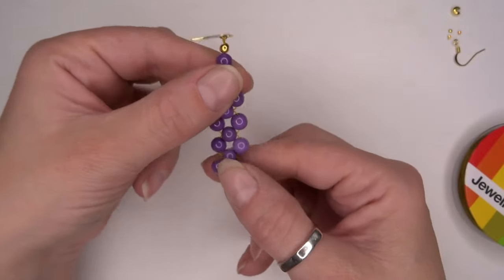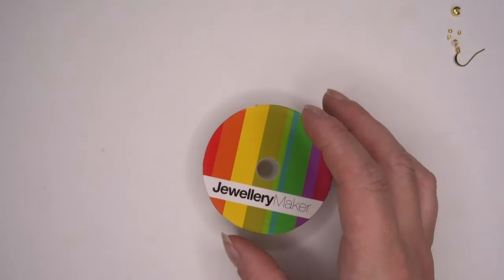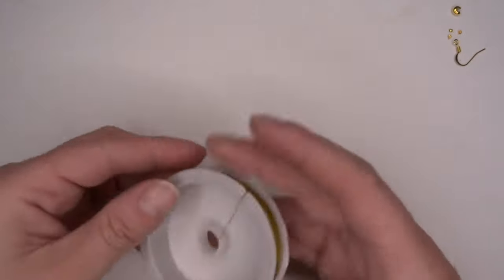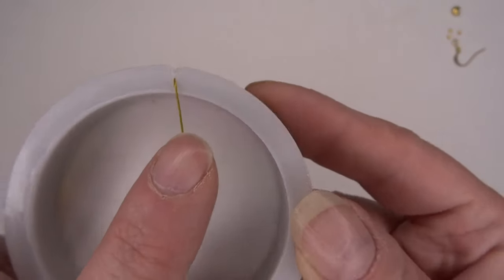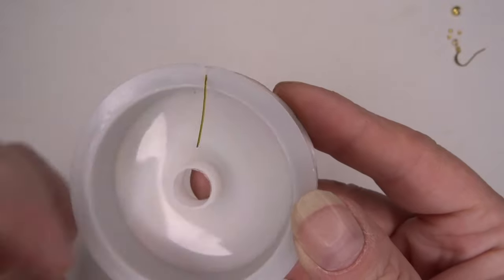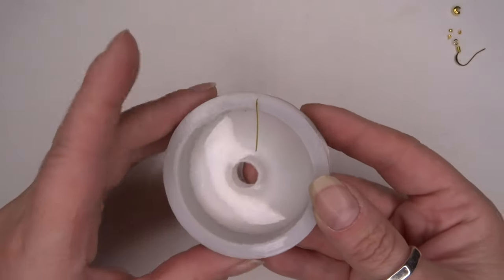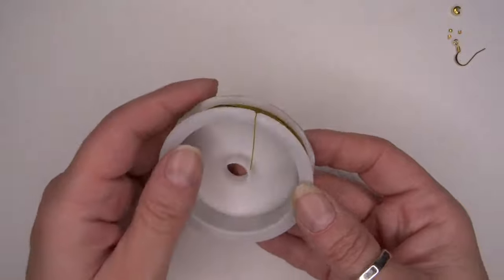So what I'm going to do first is just take some of our beading thread. Now on our beading thread here, I don't know if you can see, there's a little notch just like so. Always pop your beading thread through there before you cut because it's going to prevent it from unraveling, which is a really good tip.